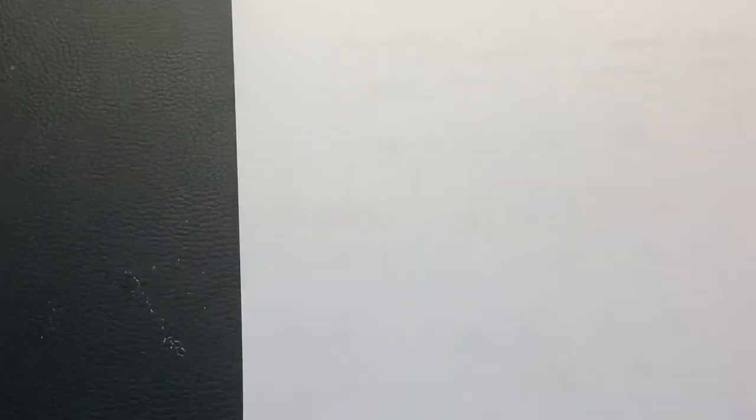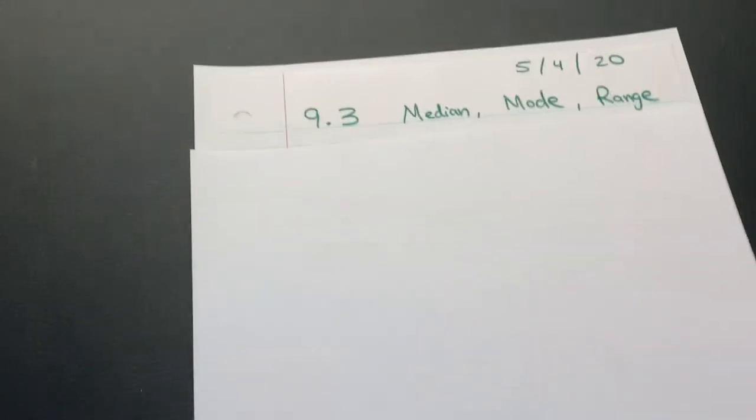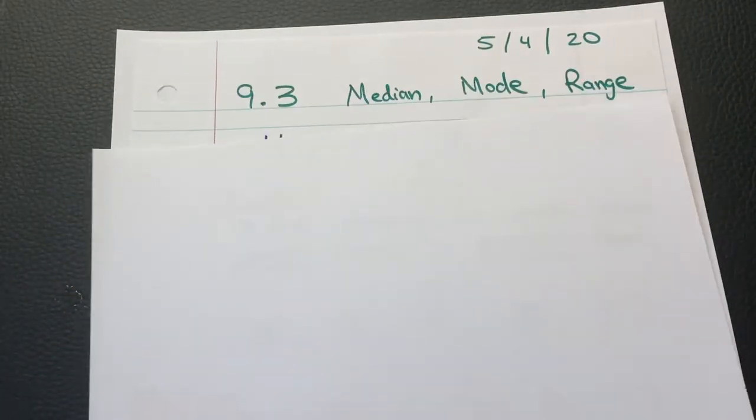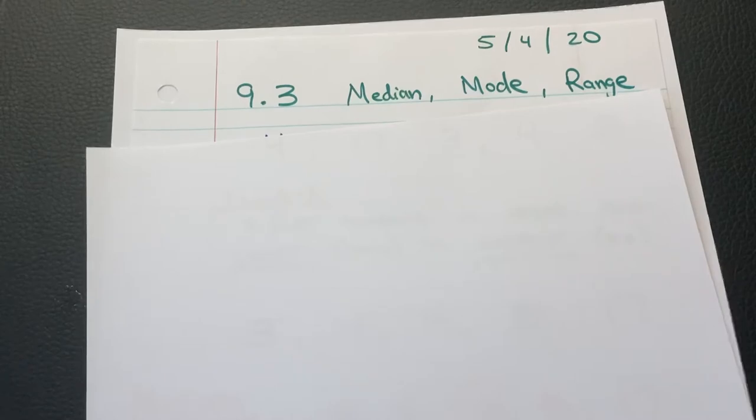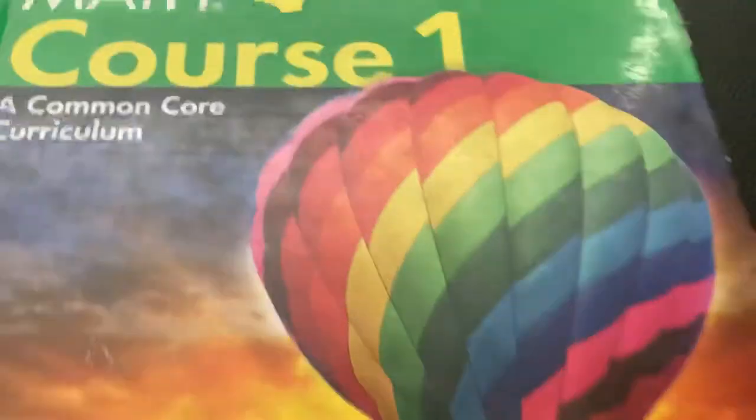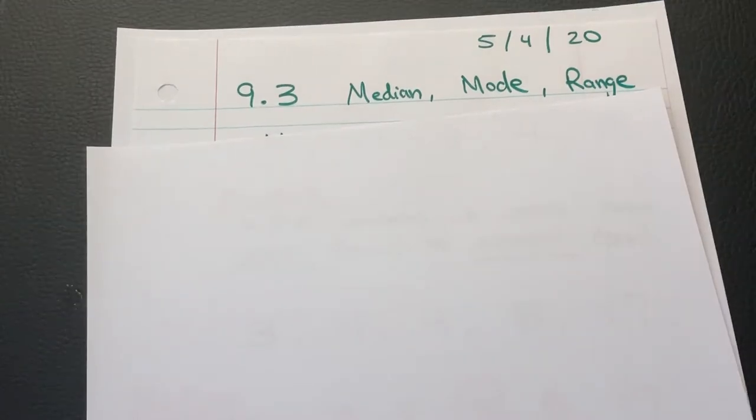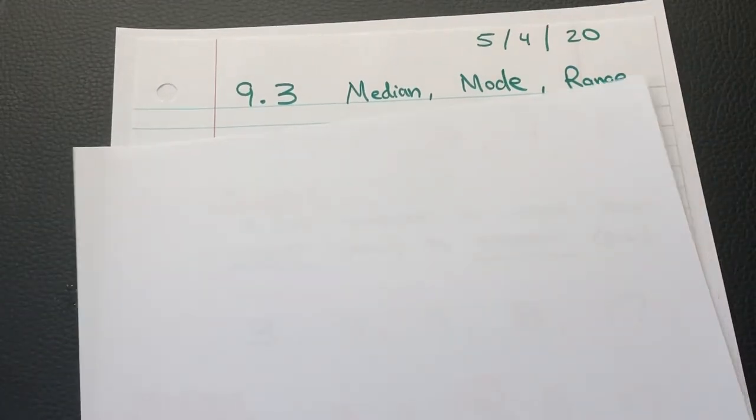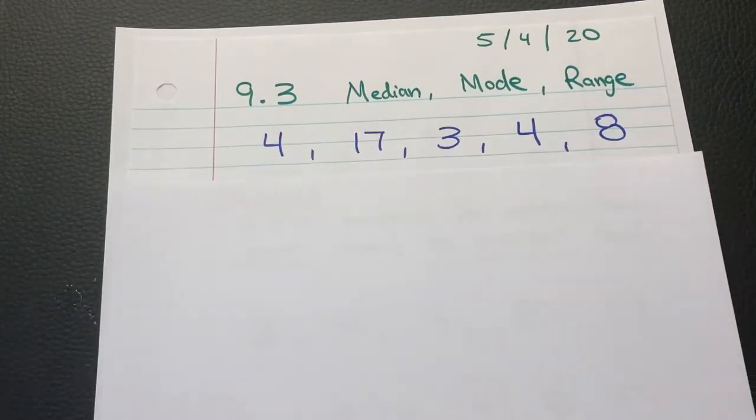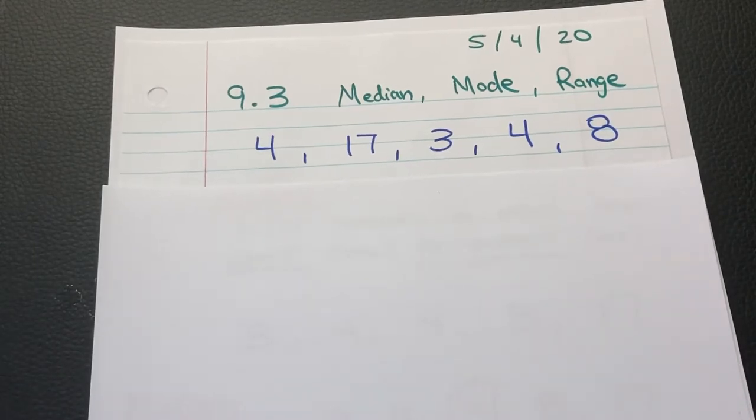So if we look on the paper here. So we're in section 9.3, median, mode, and range. We're in this textbook. This should look familiar. There's a copy of the pages in the Google Classroom. The first thing that's going to happen is that you're going to be getting a set or a group of numbers.